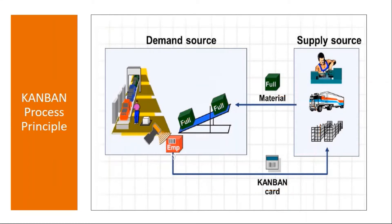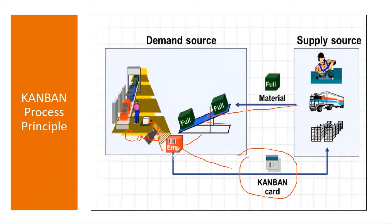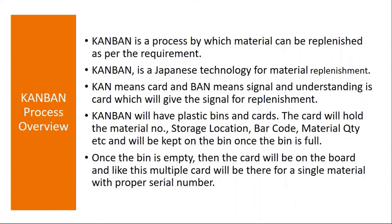This cycle goes on continuously. Each bin will have a card attached to it. When the bin becomes empty, they take the card and put it on the board — that means it has to be replenished. Once the bin becomes full, the card is attached back to the bin. So you have two things: when the bin is empty, the card goes onto the Kanban board; when it is full, the card goes back onto the bin.